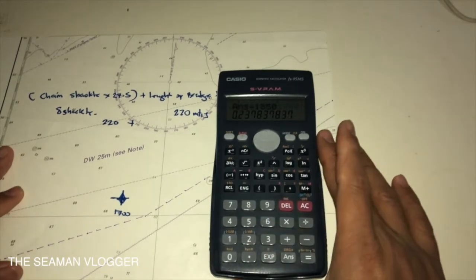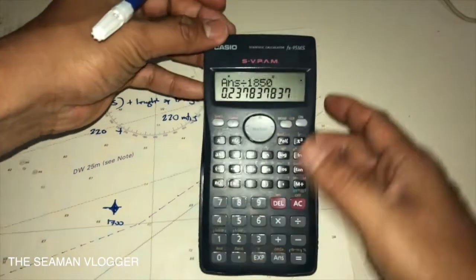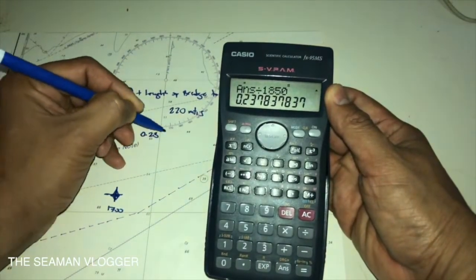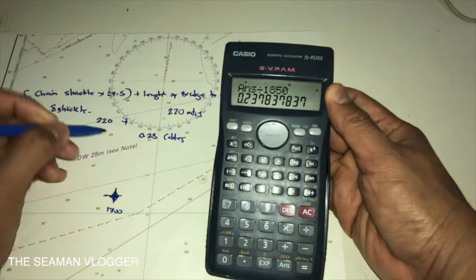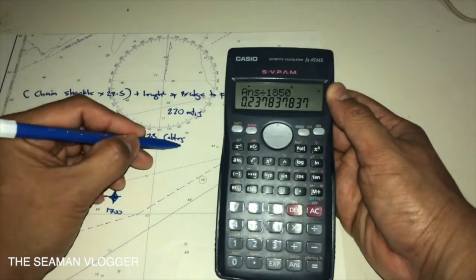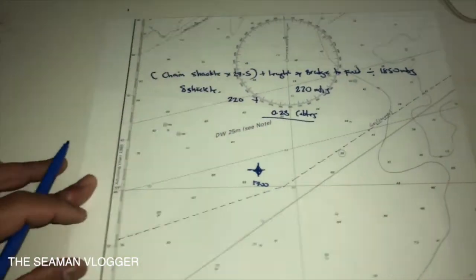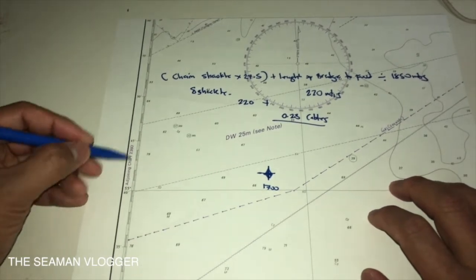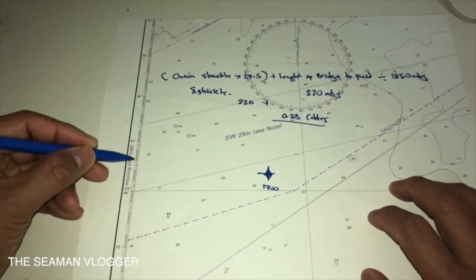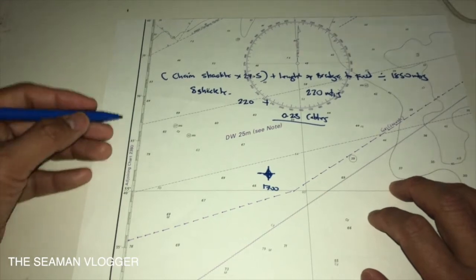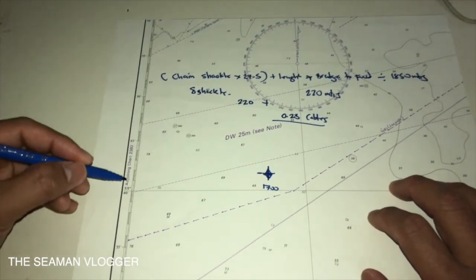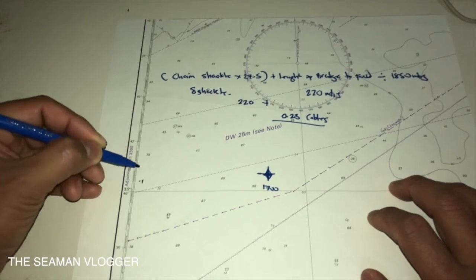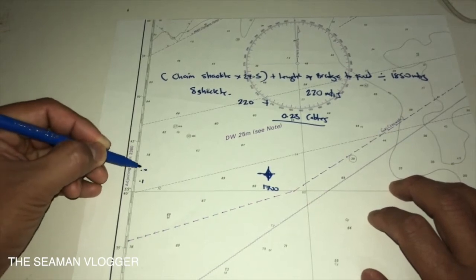So, it's around 0.23 cables. It means your radius of swing is 0.23 in this scale. So, as you can see, the scale is 1 in 10,000. So, 40, 41, 42, 44, 45. So, 0.2 is around somewhere here, this is 0.1, this is 0.2, and somewhere 0.3 here.